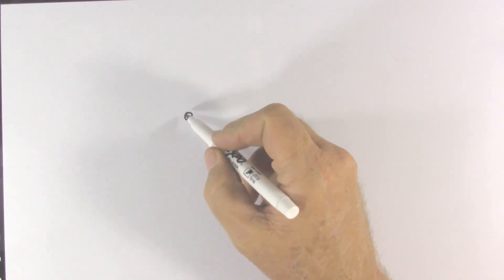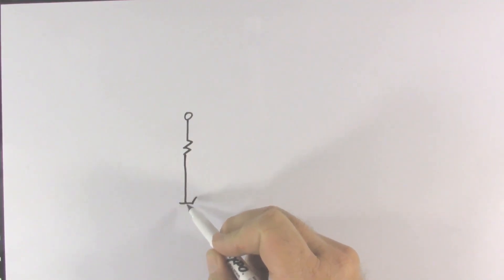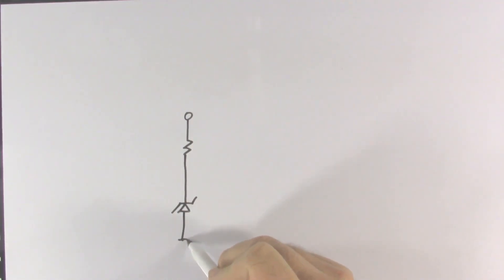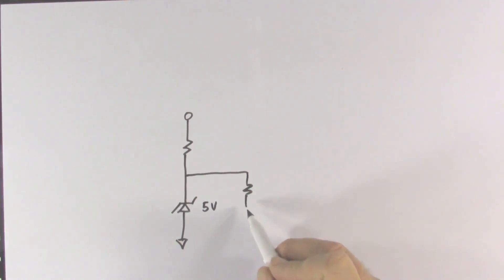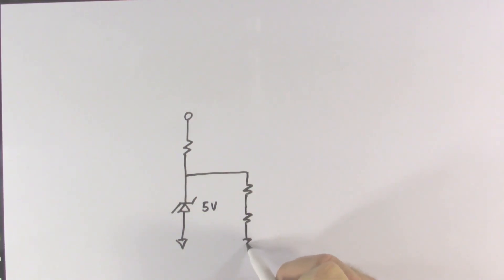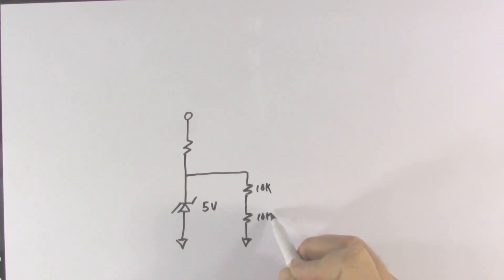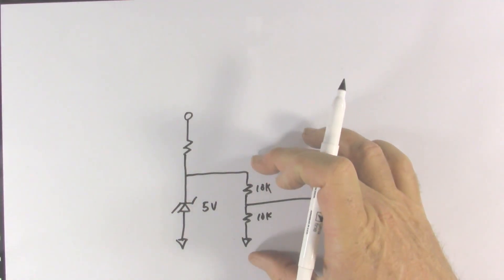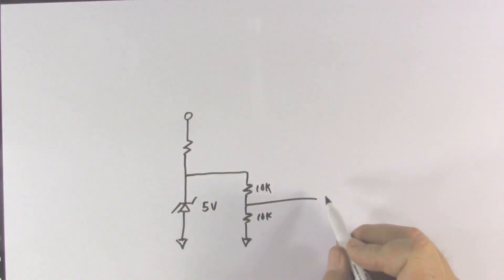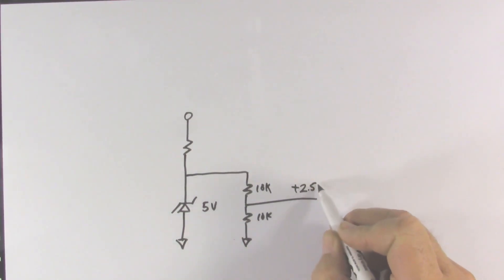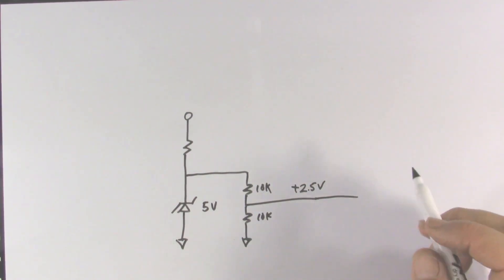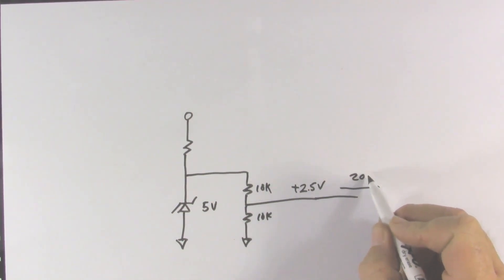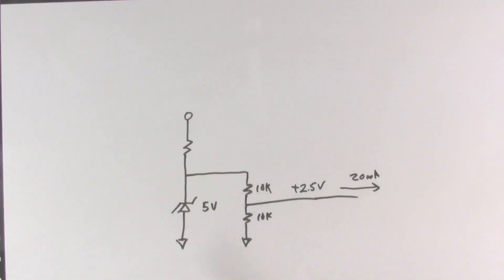One place you might use a voltage follower is for a precision voltage reference. Let's start out with a 5-volt zener diode, and let's say we want a 2.5-volt reference. Easy enough — we'll use a voltage divider with equal resistors. With equal resistors, I have 5 volts across both of them, 2.5 volts across each one, giving me 2.5 volts at this point. But let's say the circuit we are driving needs a substantial amount of current — let's say it needs 20 milliamps. Where is that 20 milliamps going to come from? It's going to come through that 10k resistor.